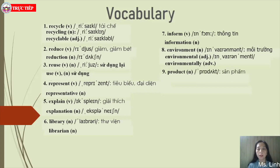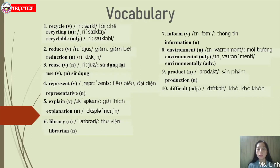Number nine: product — noun, referring to a product made by a person, company, or factory from raw materials. Related noun: production — ngành sản xuất (the production industry). Number ten: difficult — adjective, meaning not easy. Related noun: difficulty. These are the vocabulary words from the Listen and Read section. Please write them fully in your notebooks.